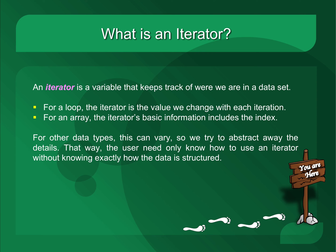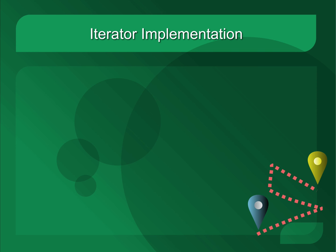So in this way, an iterator becomes an interface that allows us to access data that's stored in many different types of ways. For example, in C++, iterators usually provide three specific services.